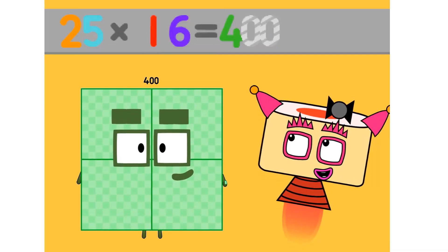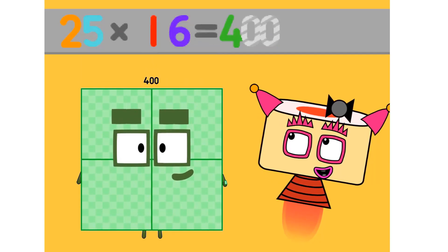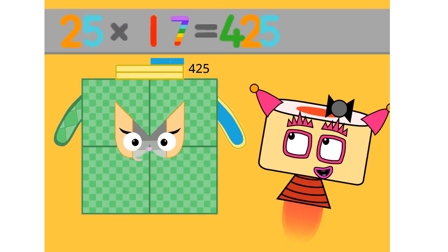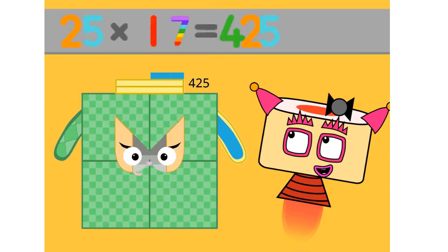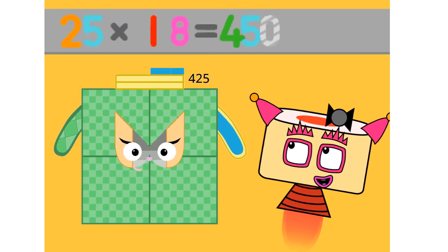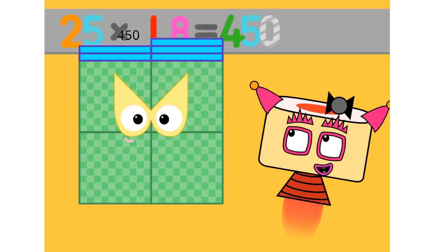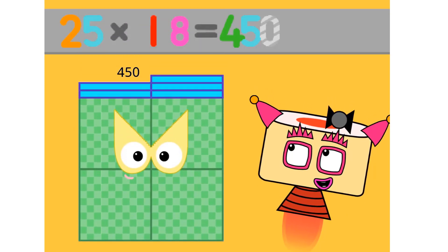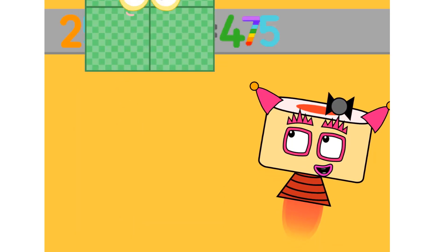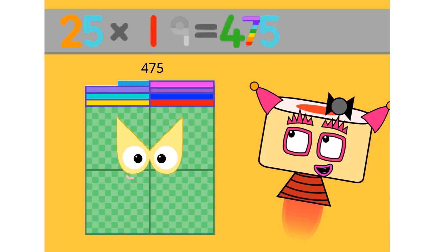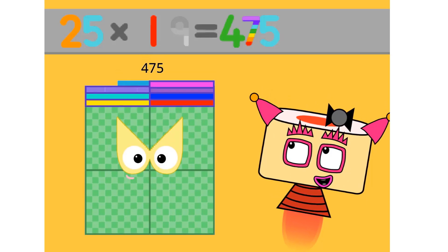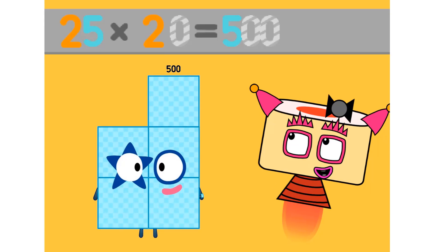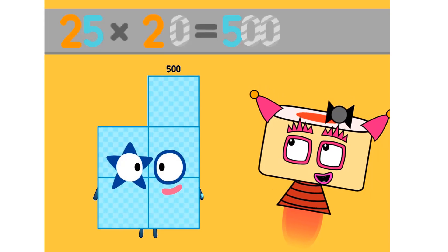25 times 16 equals 400. 25 times 17 equals 425. 25 times 18 equals 450. 25 times 19 equals 475. 25 times 20 equals 525.